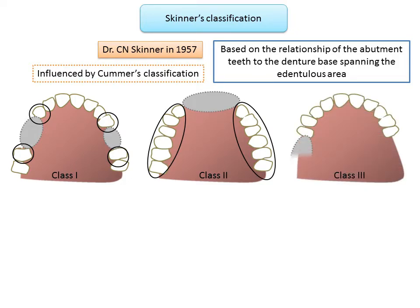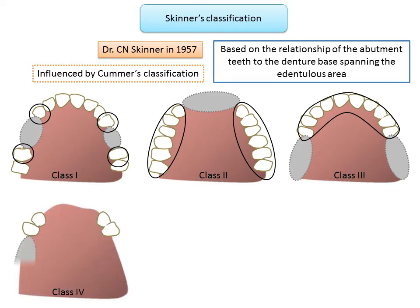Class 3: all abutment teeth are anterior to the denture base, which functions as a partial denture unit; again it may be unilateral or bilateral. So Class 2 and Class 3 are opposite to each other — in Class 2 there is an anterior edentulous space, whereas in Class 3 there are two posterior edentulous spaces. Class 4: denture bases are located anterior and posterior to the remaining teeth, which may be unilateral or bilateral — a combination of both anterior and posterior edentulous areas.